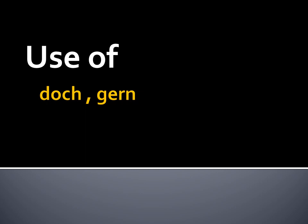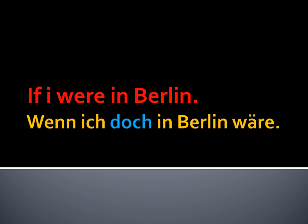Now, the use of 'doch' and 'nur'. When making a Konjunktiv 2 sentence, you can place either 'doch' or 'nur' in the middle of the sentence. It just makes the sentence stronger — your wish becomes more emphatic. For example: 'If I were in Berlin' — since you are not in Berlin but wish you were — you say: 'Wenn ich doch in Berlin wäre.' We started with 'wenn' as a connector, so the verb goes last.